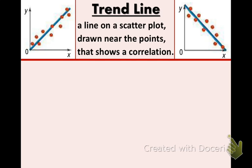Alright, now let's talk about what a trend line is. A trend line is a line on a scatter plot drawn near the points that show a correlation. So you can see on the left side, we have a positive correlation and a line, trend line, it has a positive slope. And on the right side, we have a negative correlation, the points are going down, and we have a negative slope on that line.